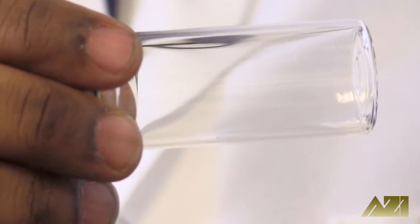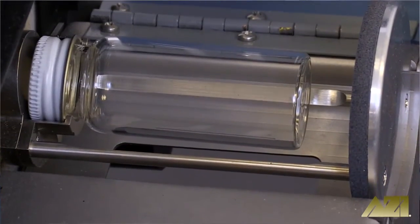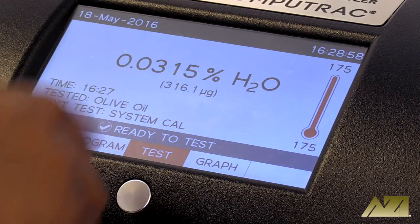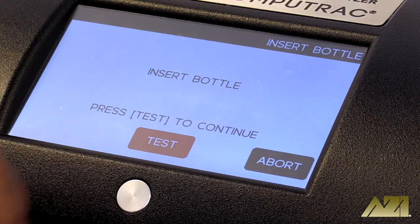Place the bottle on the transport with the cap side toward the instrument. Hit the test button in the middle bottom of the touchscreen and follow the on-screen instructions.